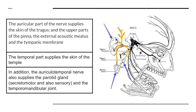Apart from supplying the upper part of the ear, it also goes upwards and gives a temporal part which supplies the skin of the temple. In addition, the auriculotemporal nerve also supplies the parotid gland with secretomotor and sensory fibers, and supplies the temporomandibular joint.